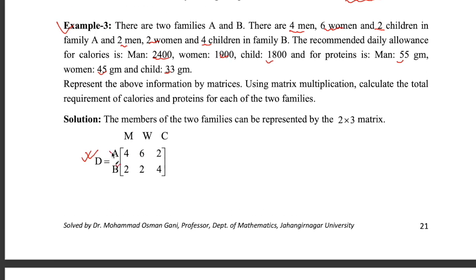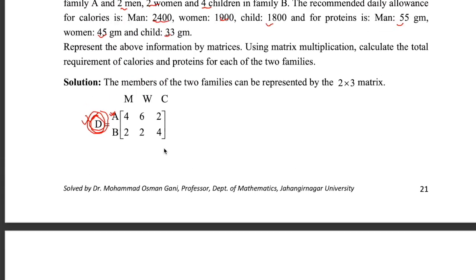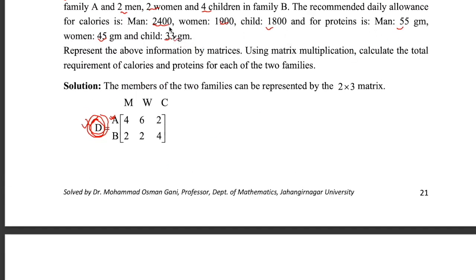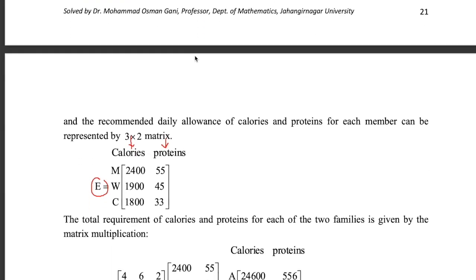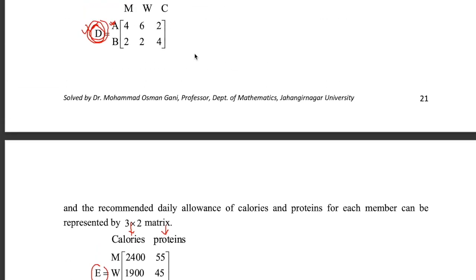First you need to create a matrix for the family members. In family A: four men, six women, two children; in family B: two, two, four. So matrix D contains the family members. Then you need to create another matrix E which contains the calories and protein values for men, women, and children. To calculate the total calories and protein you now need to multiply the corresponding rows and columns.